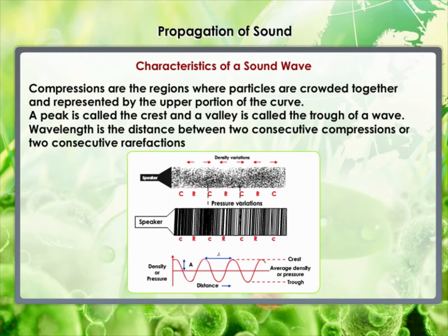Compressions are the regions where particles are crowded together, represented by the upper portion of the curve. The peak represents the region of maximum compression — compressions are regions where density as well as pressure is high. Rarefactions are regions of low pressure where particles are spread apart, represented by the valley (lower portion of the curve). A peak is called the crest, and a valley is called the trough of a wave. The distance between two consecutive compressions (C) or two consecutive rarefactions (R) is called the wavelength, usually represented by the Greek letter lambda (λ), with SI unit meters (m).